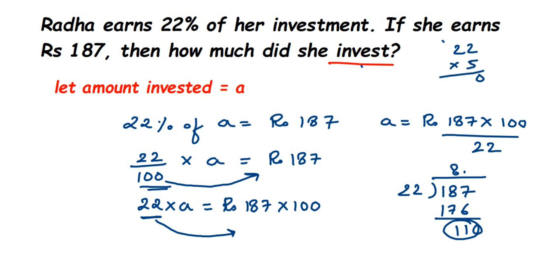So we got 110 here. So 22 times 5 is 110, so we got the remainder 0. So we got 8.5 here, so we have to multiply this with 100 again.